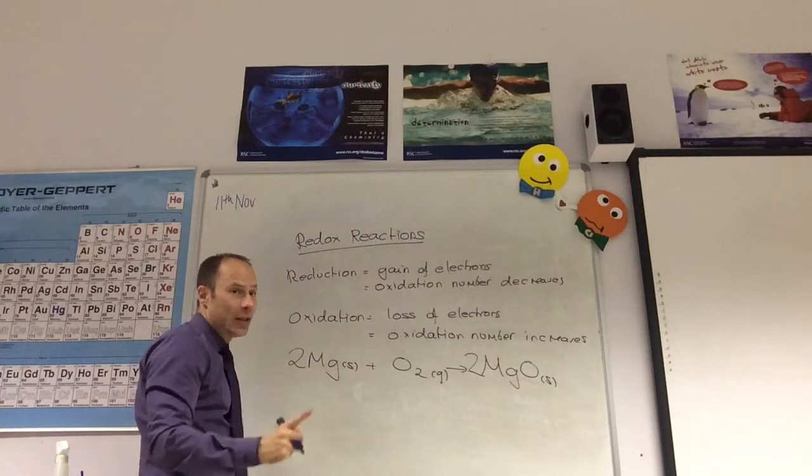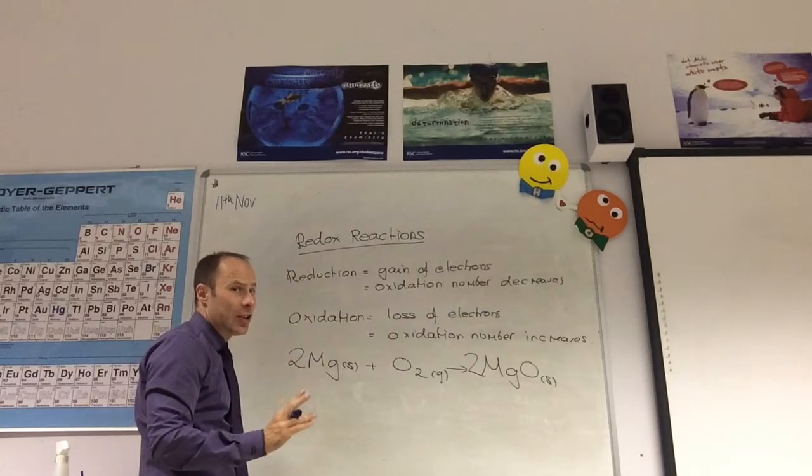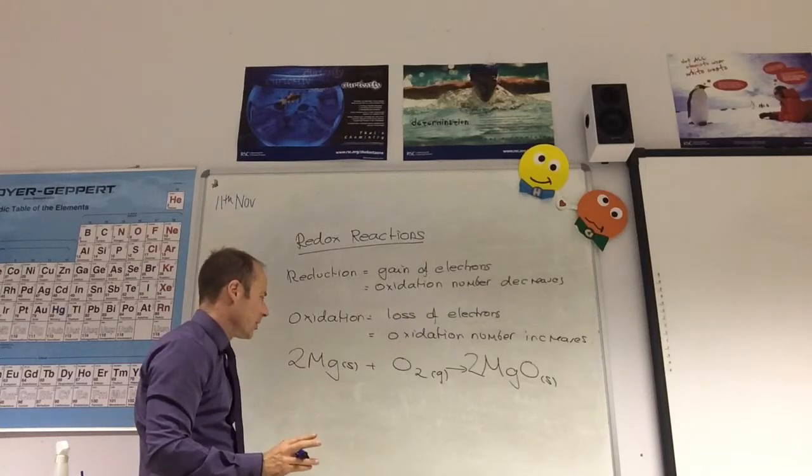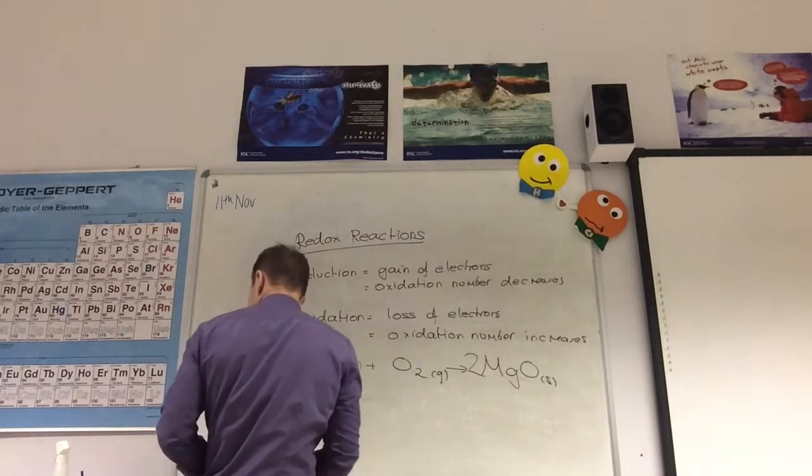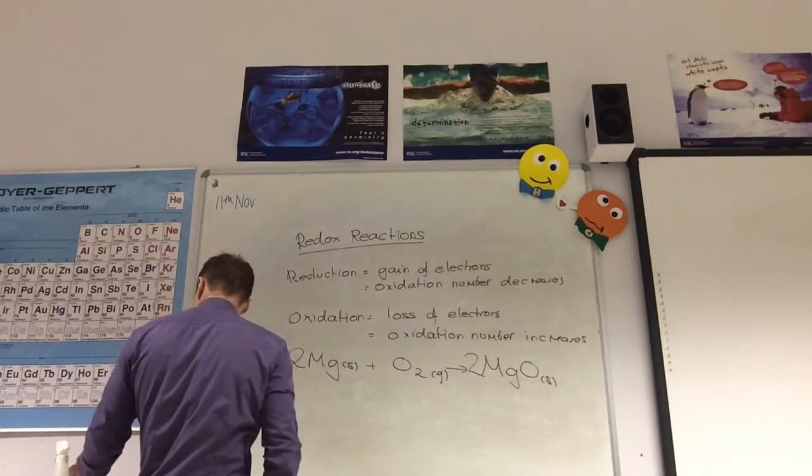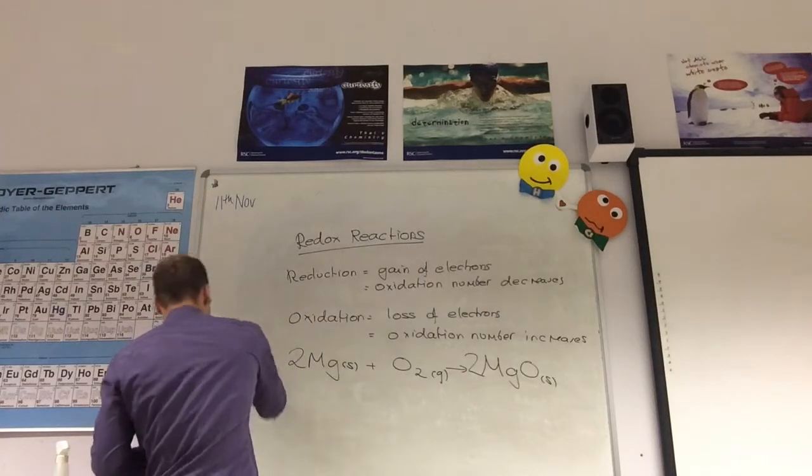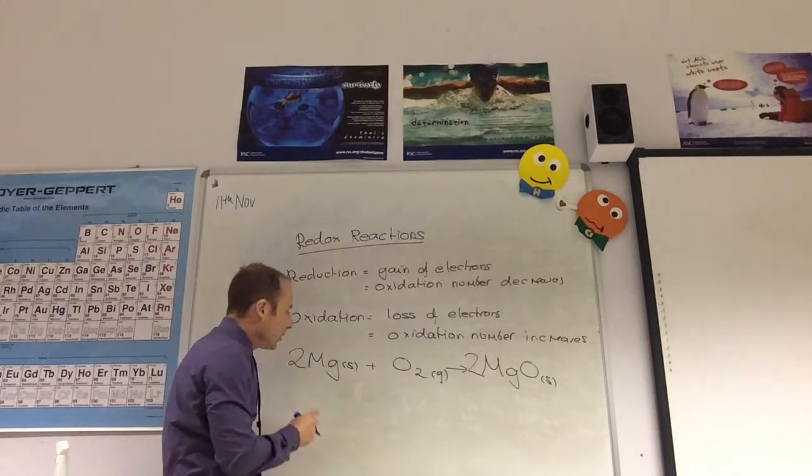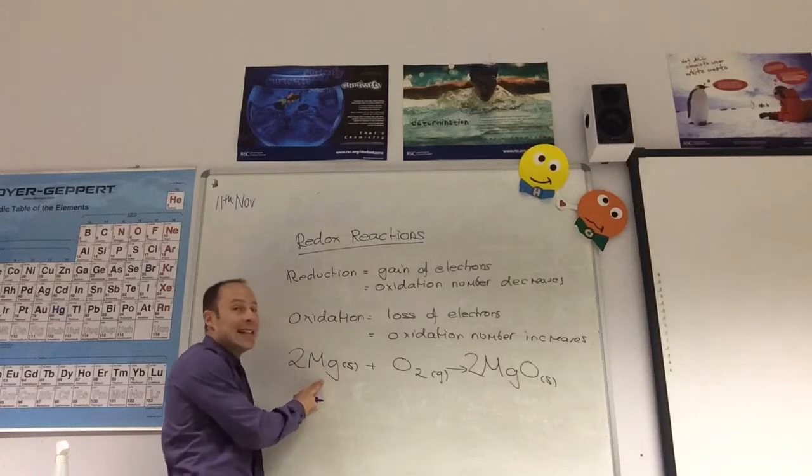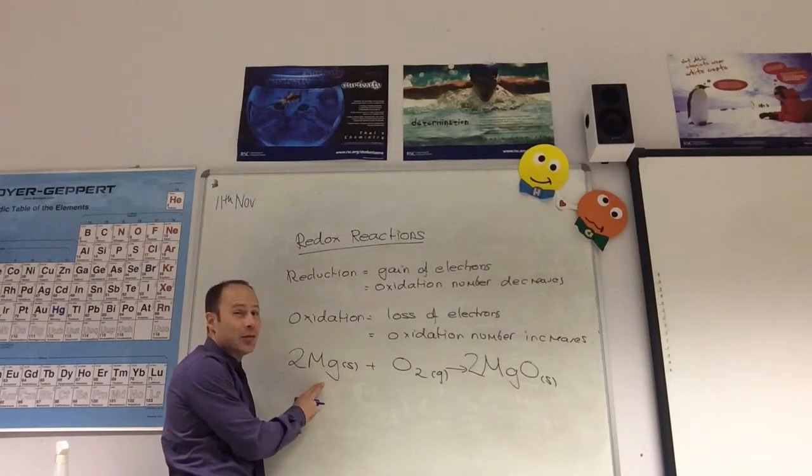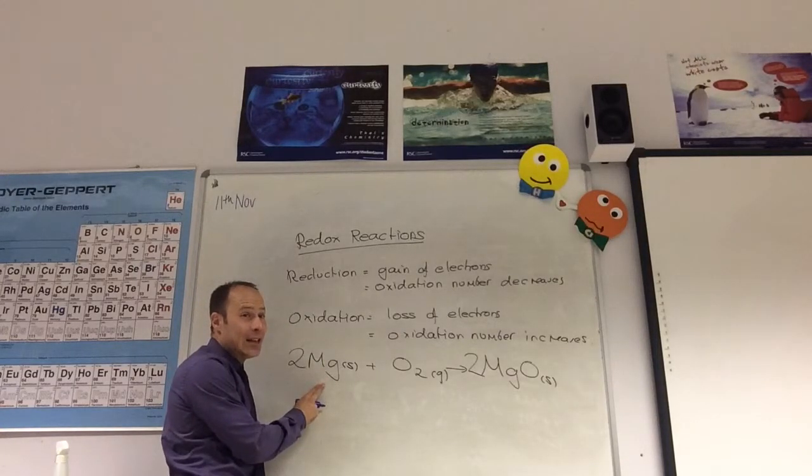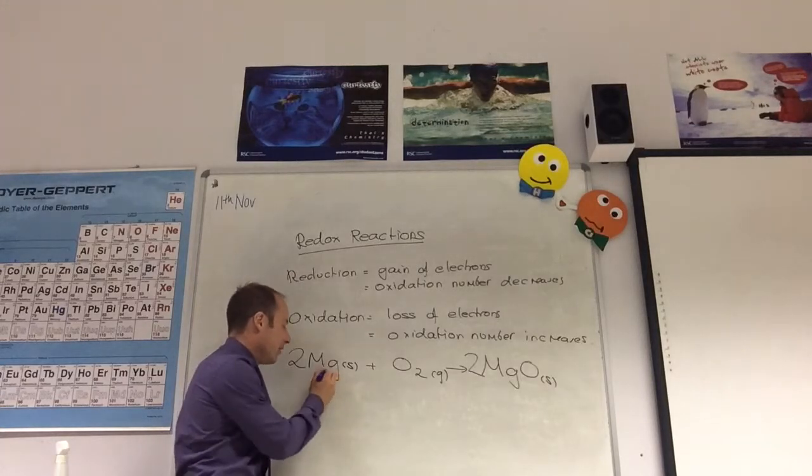When I'm deciding oxidation numbers, I don't worry about the big numbers. Let's have a look at this. What is the oxidation number of magnesium? Solid magnesium as an element is zero.